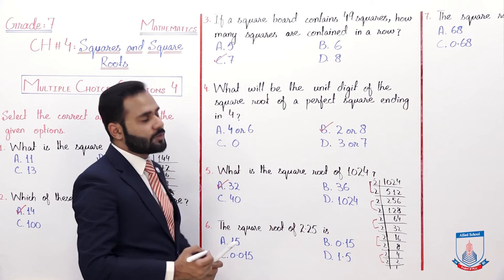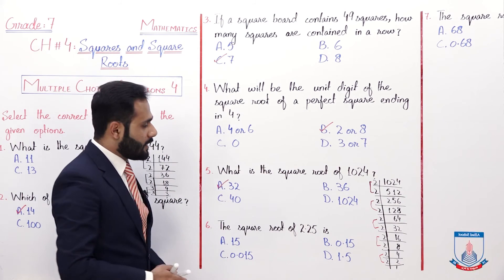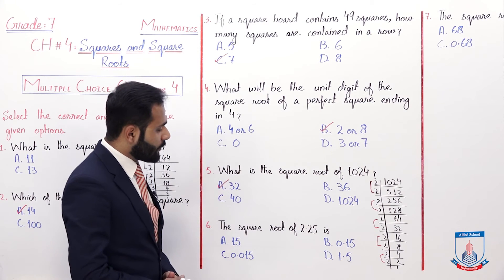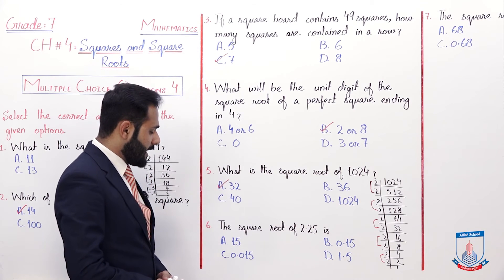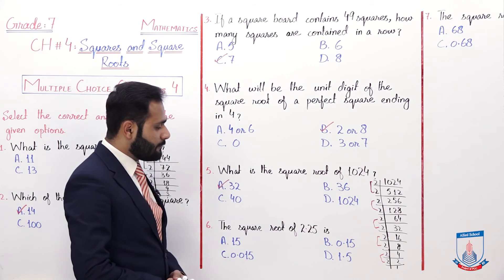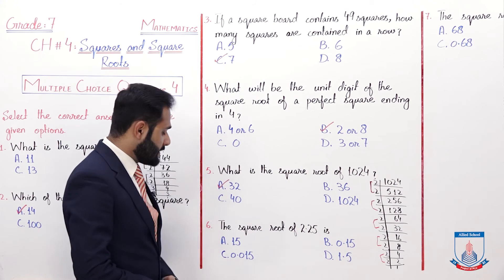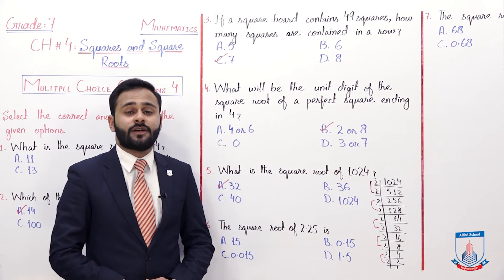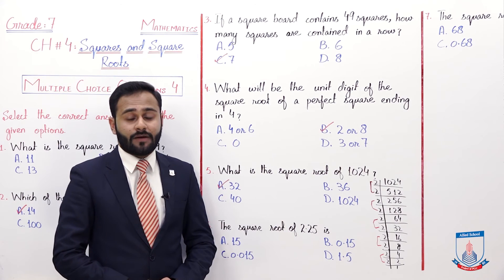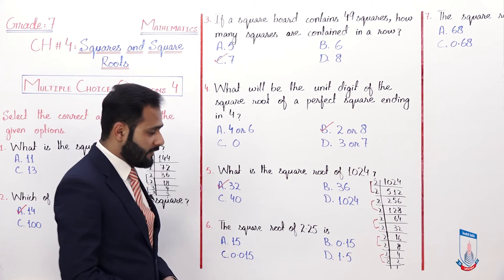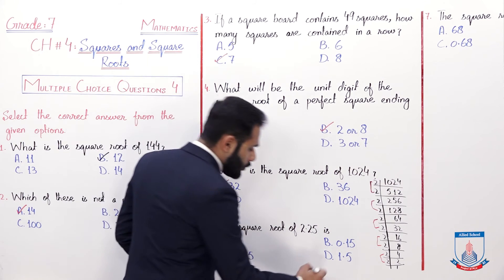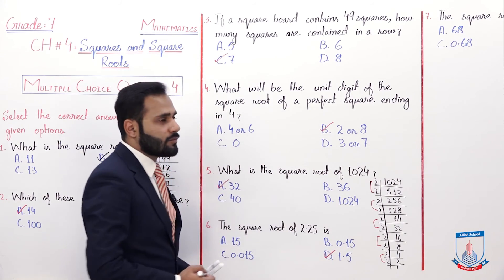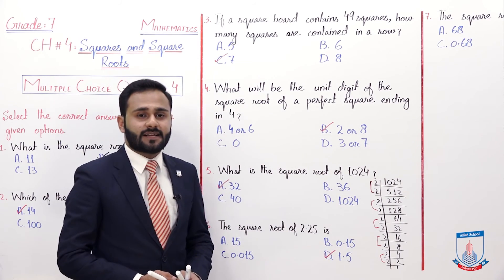MCQ number 6: the square root of 2.25. The options are a) 15, b) 0.15, c) 0.015, and d) 1.5. The square root of 2.25 is 1.5, which is option d. So the correct option is d.